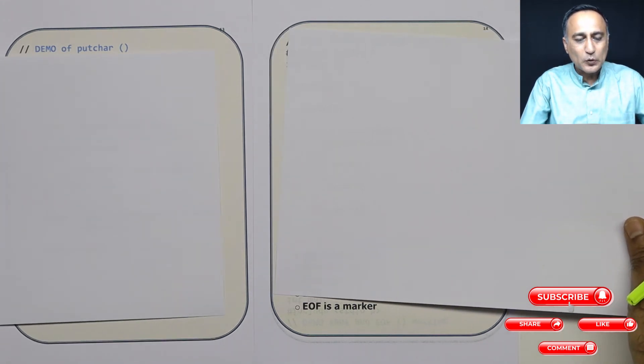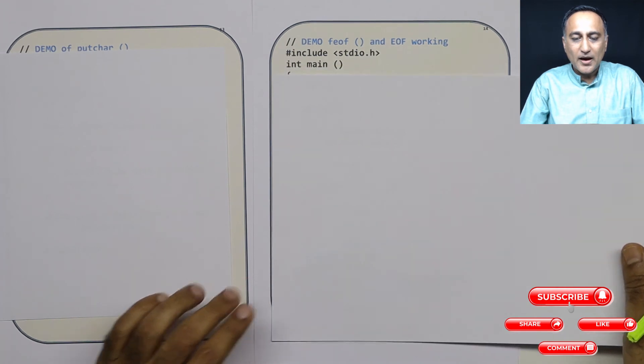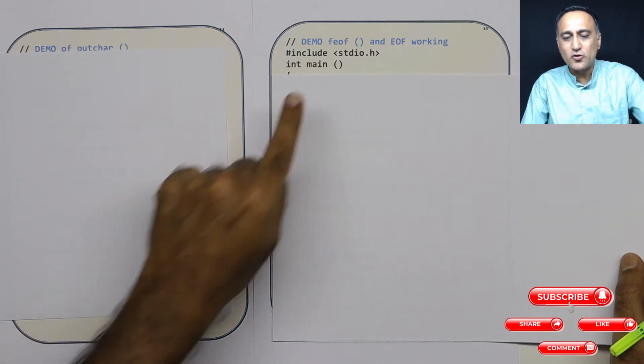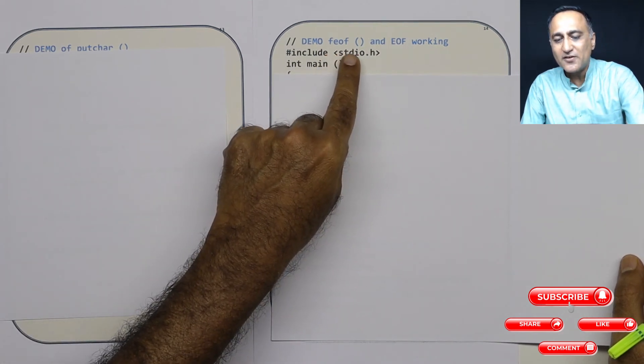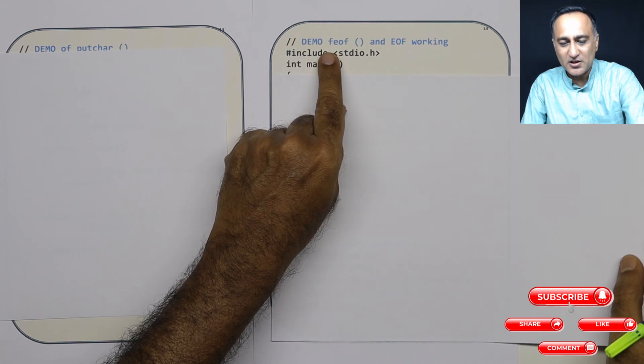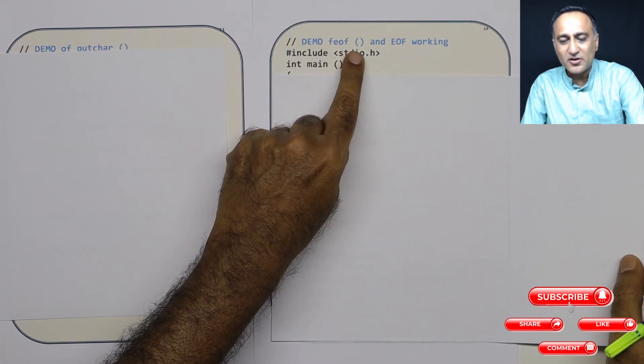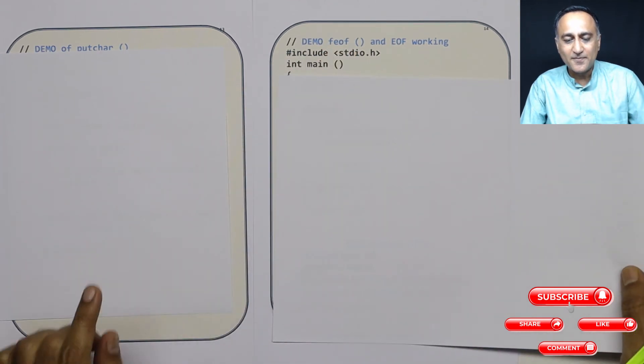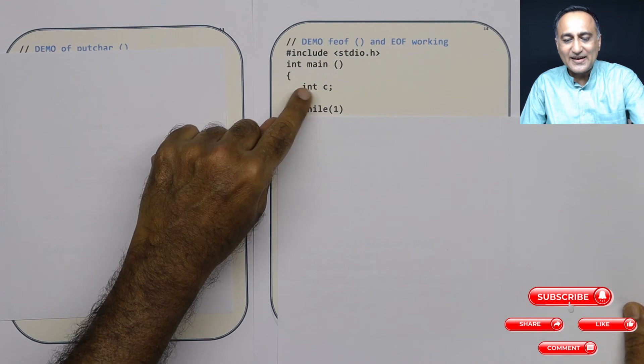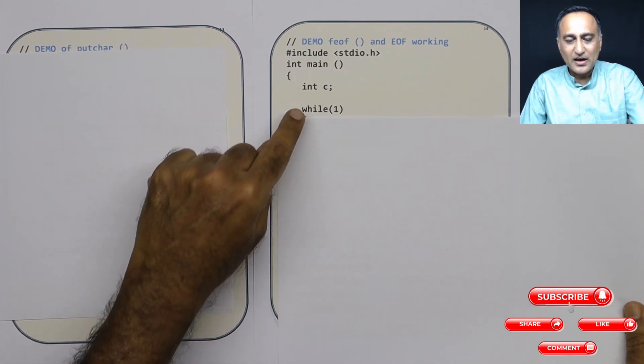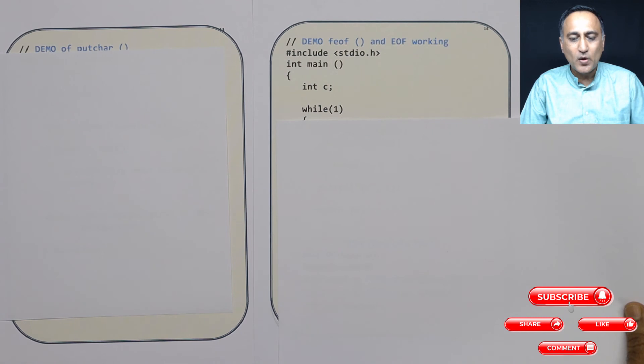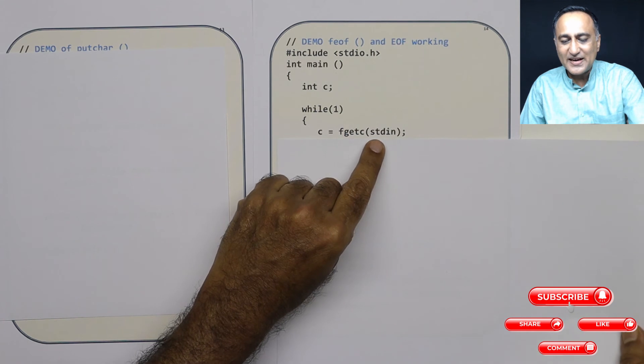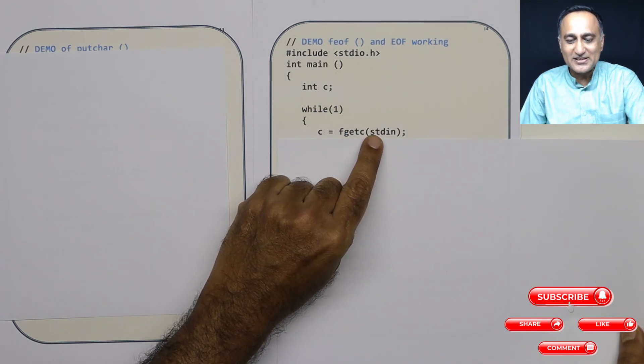Now, let's take a look at one program to show you end of the file through a function called FEOF. So this is going to demo how you use this FEOF function. FEOF stands for function to determine whether we have reached the end of the file. I have defined int character c, I have put while in an infinite loop, you will slowly know why that is in the infinite loop.